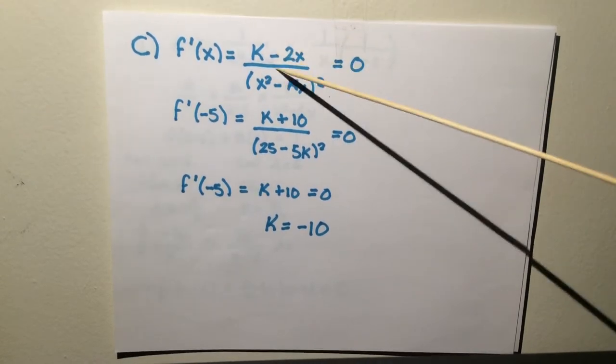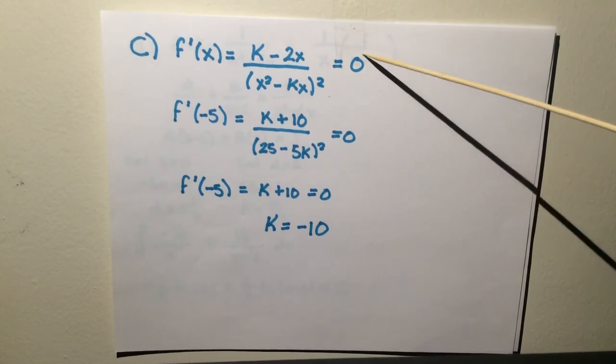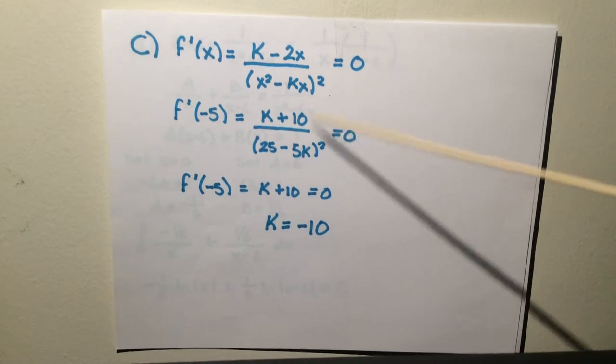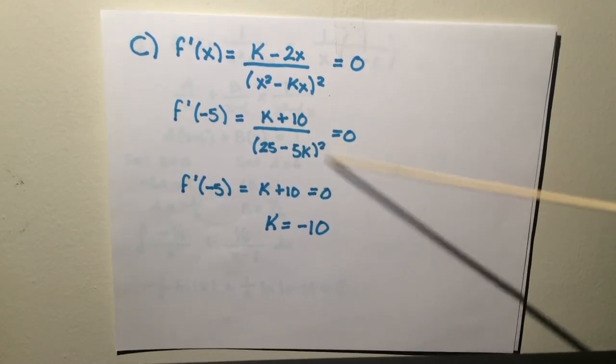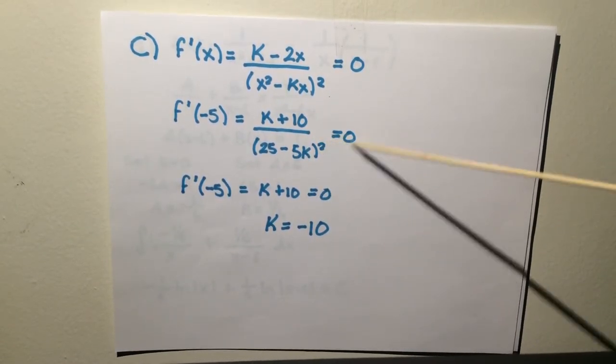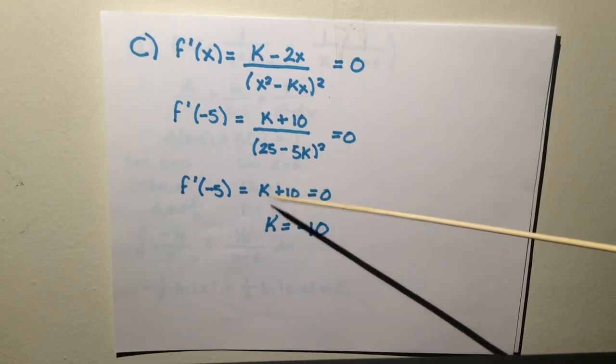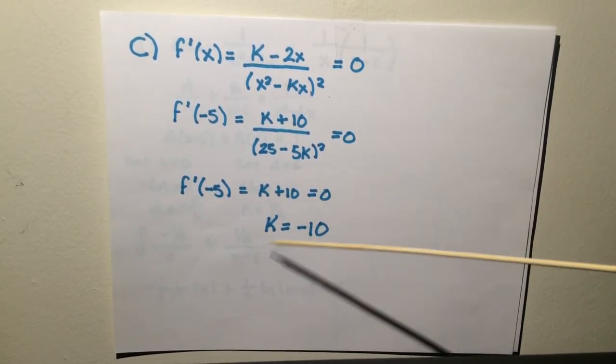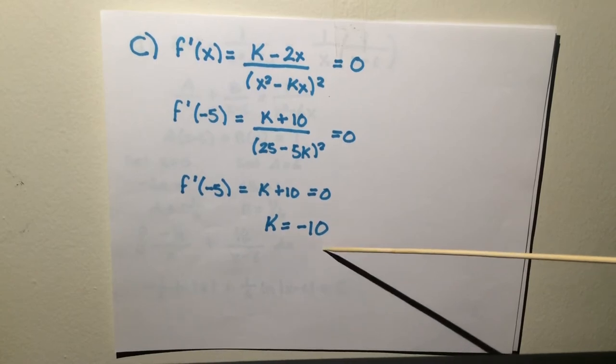This is the formula that's already given to you, and it equals 0. I plug in negative 5, which is what they ask for, and I get this, and I multiply this to the other side. It just leaves me with k plus 10 equals 0. You solve for k, and you get k equals negative 10.